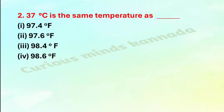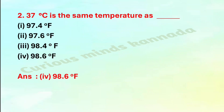Second question: 37 degree Celsius is the same temperature as — option one: 97.4 degree Fahrenheit, option two: 97.6 degree Fahrenheit, option three: 98.4 degree Fahrenheit, option four: 98.6 degree Fahrenheit. The correct answer is option four: 98.6 degree Fahrenheit.